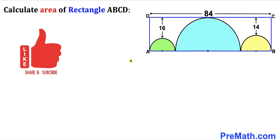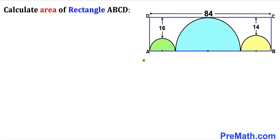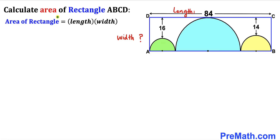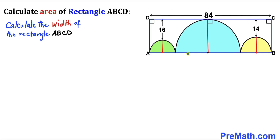Please don't forget to give a thumbs up and subscribe. Note that this figure may not be 100% true to scale. Since we are interested in finding the area of this rectangle, let's recall the formula: area equals length times width. The length of rectangle ABCD is 84 units, but the width is unknown, so we will calculate the width first.